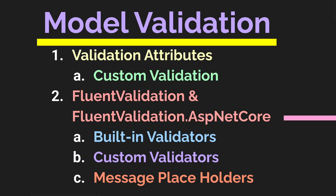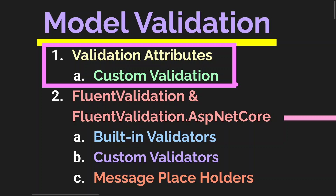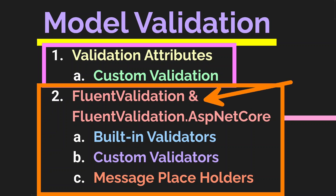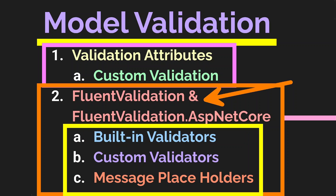Today's video is about model validation and we're going to look at two approaches. One is validation attributes and the other one is using an awesome and very loved library called FluentValidation. We're going to dive into this library and get familiar with some of its really cool features, and by the end of this video you should have a very good understanding of how to integrate this library in your service.